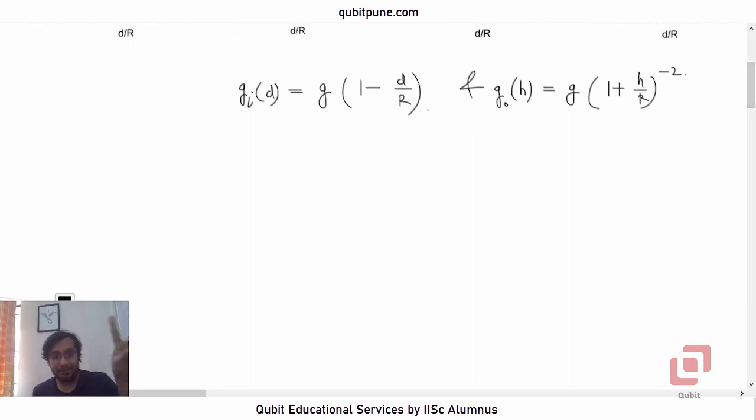Now quite often in calculating this acceleration due to gravity at a height, we approximate this using the linear approximation of the binomial expansion and we approximate this as 1 minus 2h upon R. But we do not intend to do that here. We do not do this, otherwise we will not get the right answer. We do not approximate here. Please note that. In this problem we are not going to approximate. So we will not be using this. We will be using the actual expression.